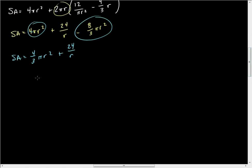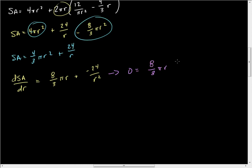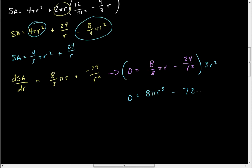When we take the derivative of the surface area with respect to r, we get dSA/dr equals (8/3)πr minus 24/r². Setting that equal to 0, we get 0 = (8/3)πr − 24/r². Multiplying both sides by 3r² to clear the fraction gives 0 = 8πr³ − 72.